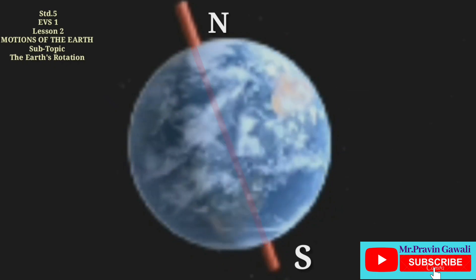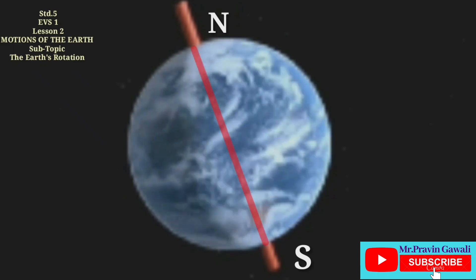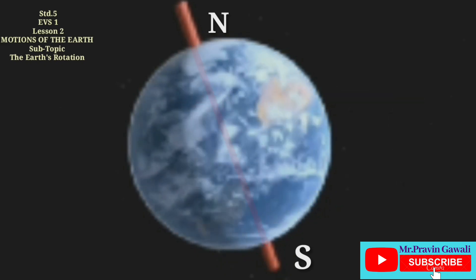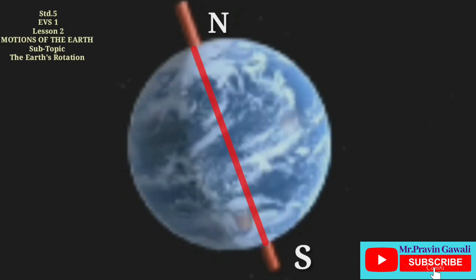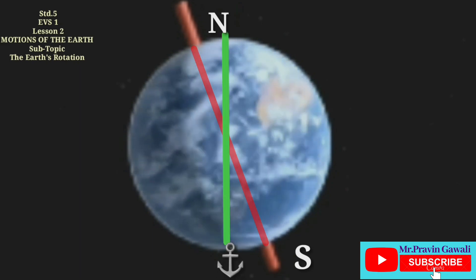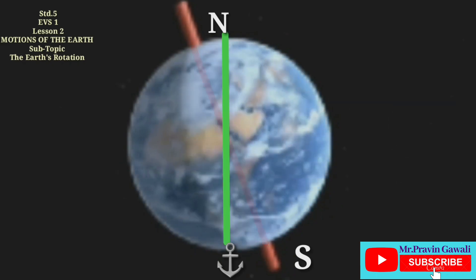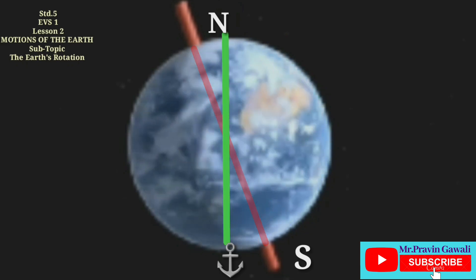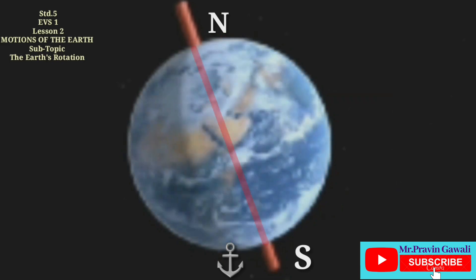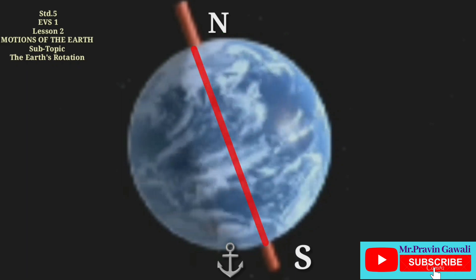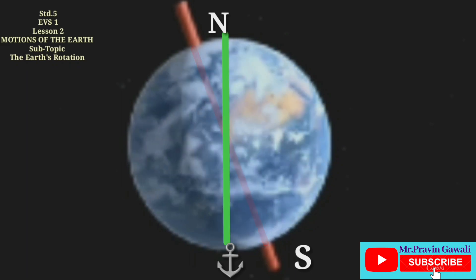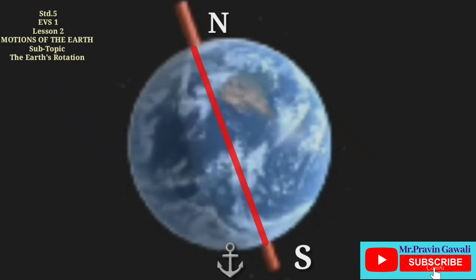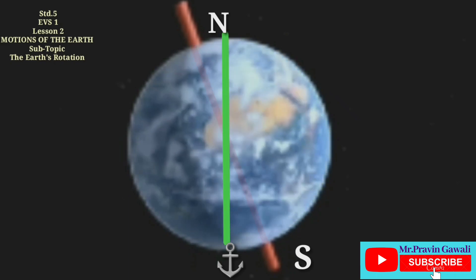The Earth rotates from west to east side. Now take a plumb line and hold it close to the globe. You will see that the plumb line and the Earth's axis are at an angle to each other. That is, the Earth's axis is inclined. It means the Earth's axis is somewhat bent down. The Earth rotates with its axis inclined like this.